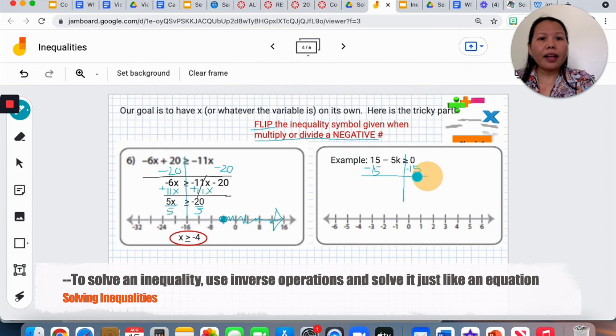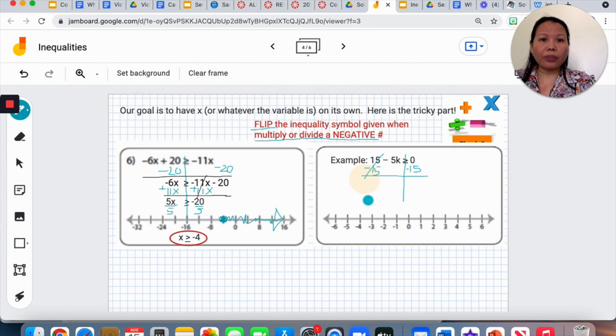I will subtract 15 to both sides first. My closest friends go last and that is something that I keep in mind. If you're wondering how come I get rid of the 15, why not the 5 first? 5 is closer to K so it's going last. Now I subtract 15 to both sides. I will cancel out the left hand side.